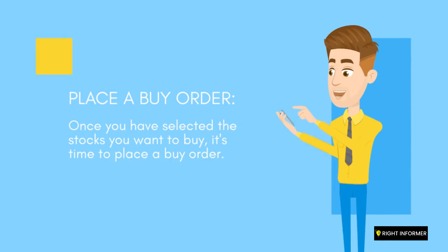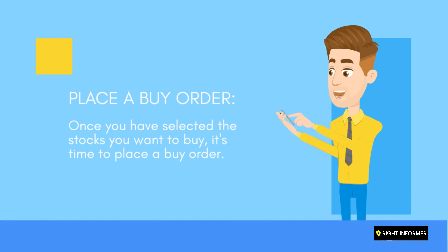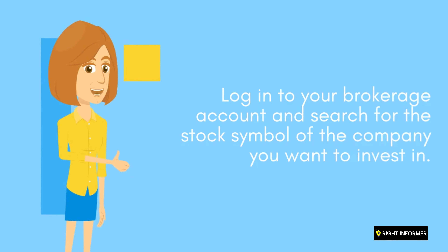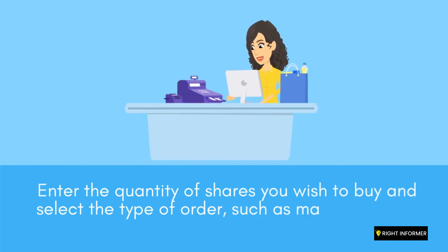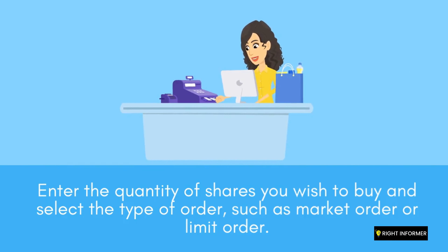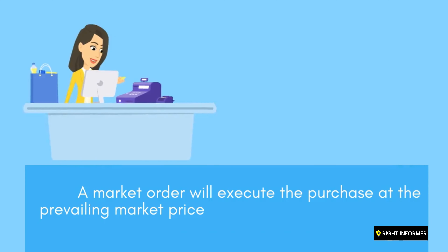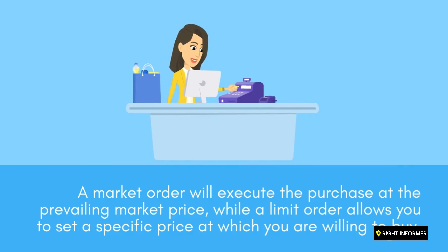Place a buy order. Once you have selected the stocks you want to buy, it's time to place a buy order. Log into your brokerage account and search for the stock symbol of the company you want to invest in. Enter the quantity of shares you wish to buy and select the type of order, such as a market order or limit order. A market order will execute the purchase at the prevailing market price, while a limit order allows you to set a specific price at which you are willing to buy.